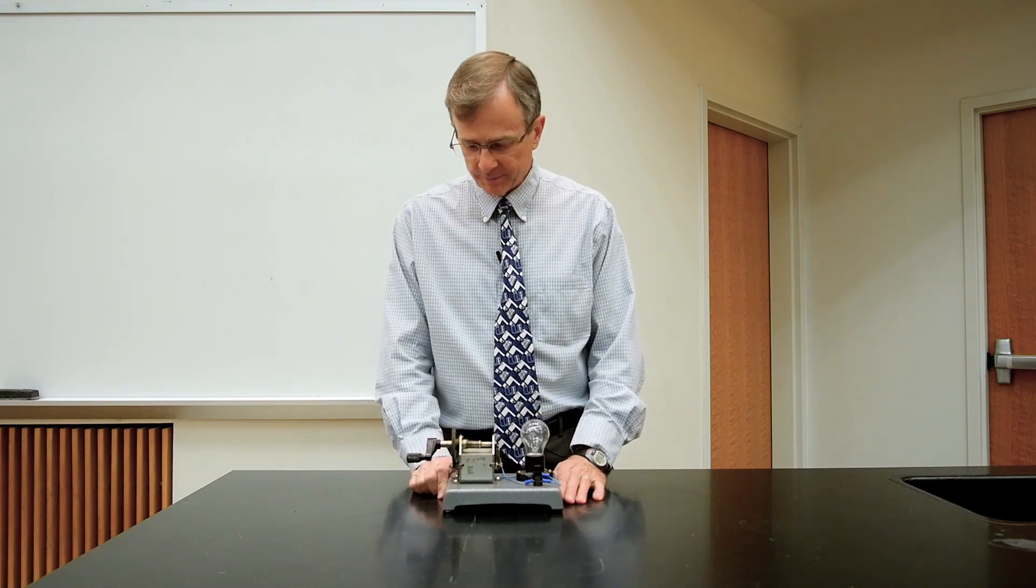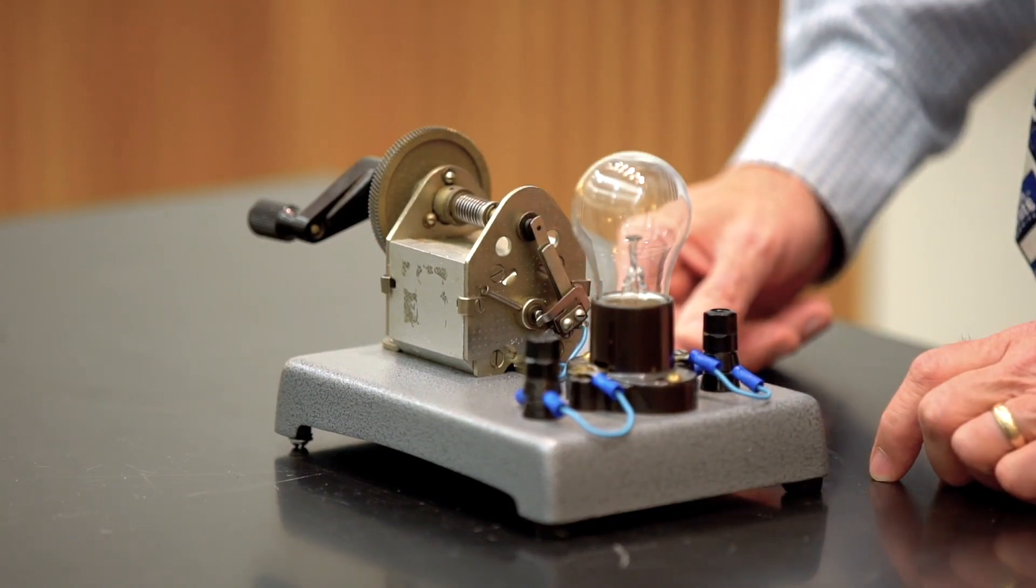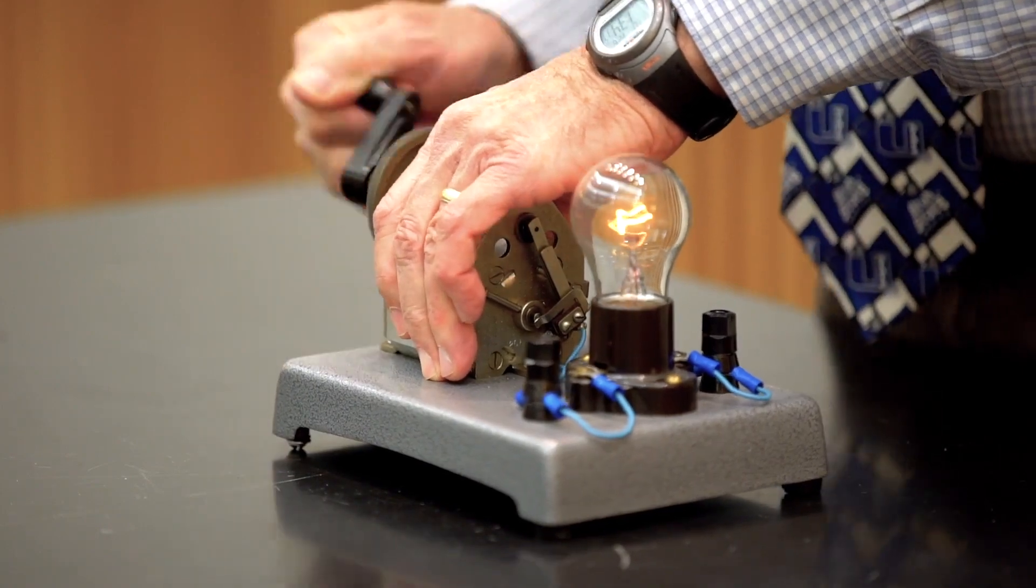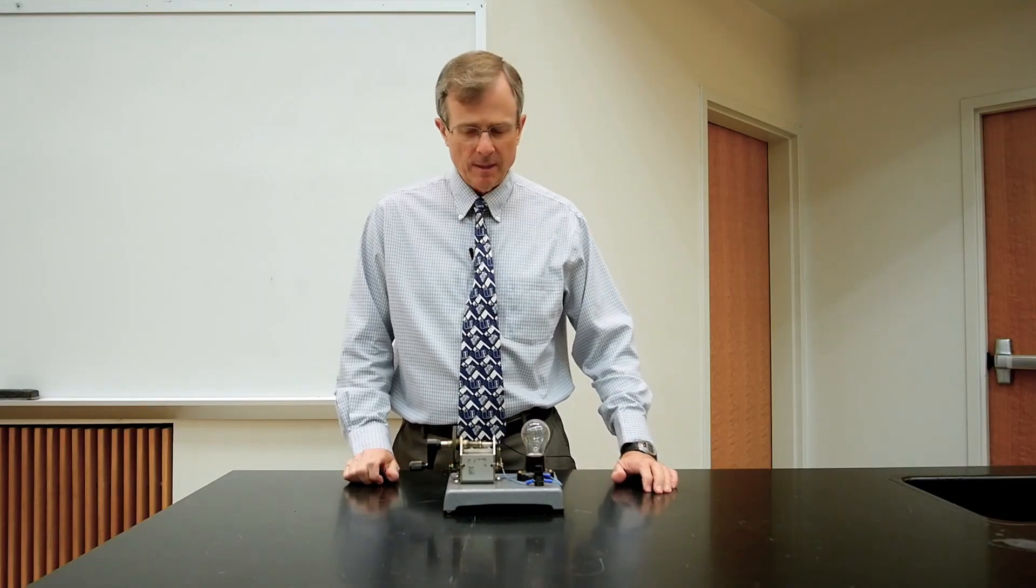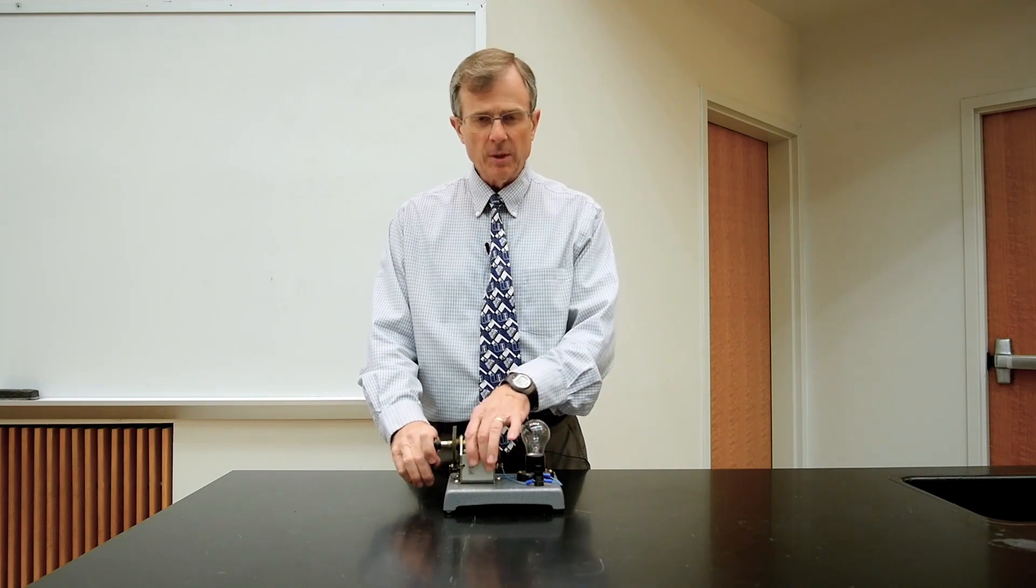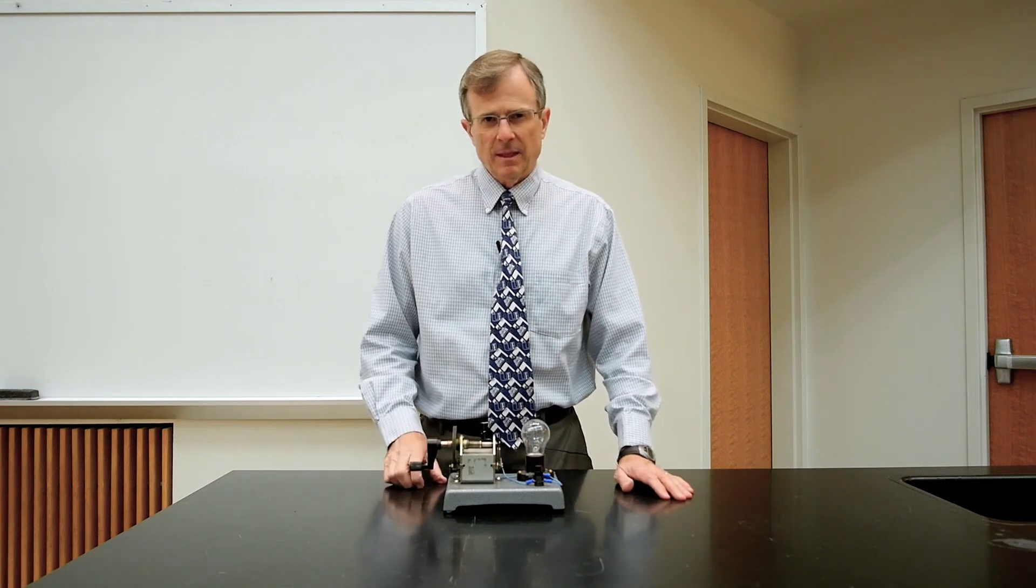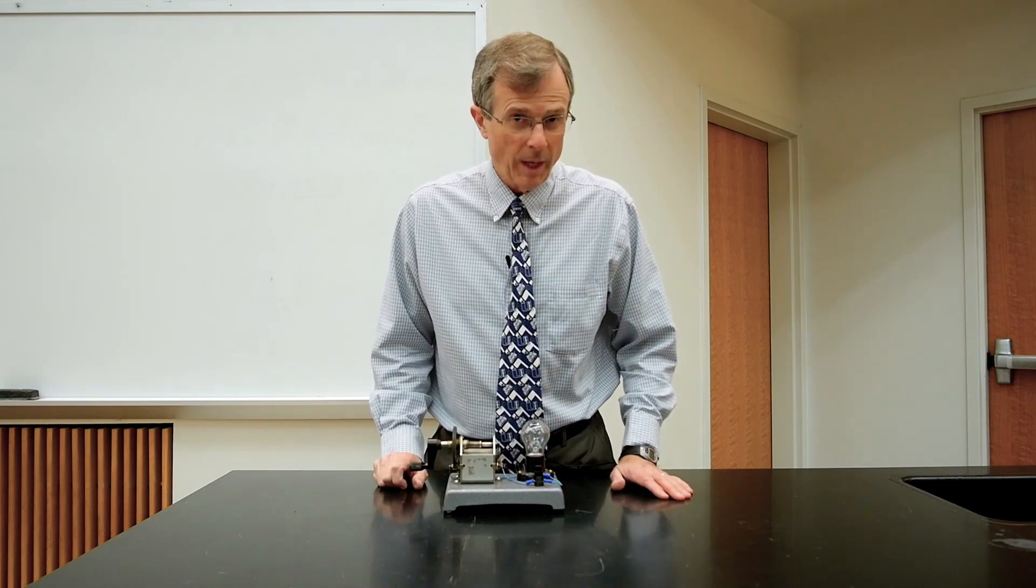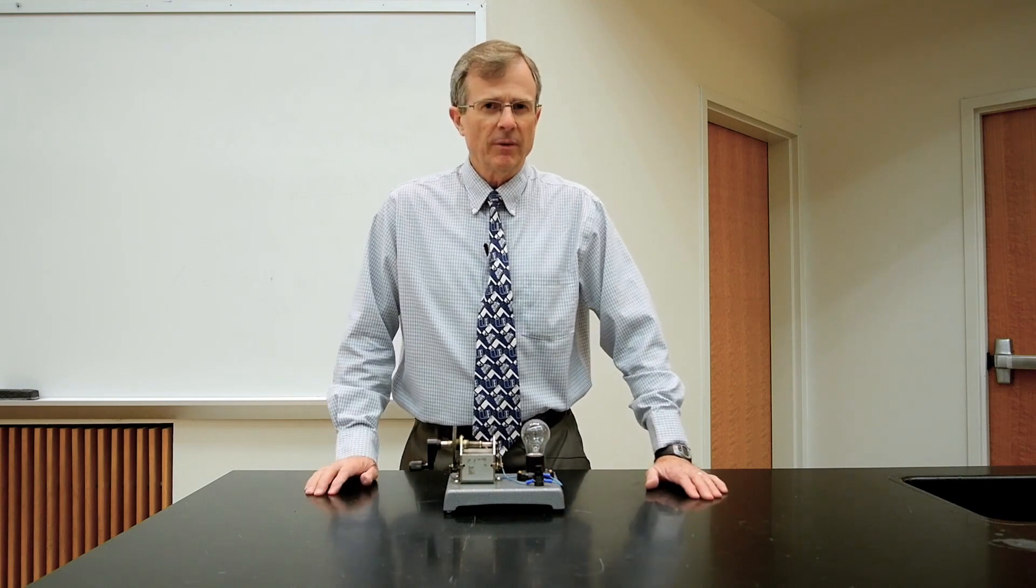This is also a generator. I'm going to turn this crank and generate a current in this bulb. Okay, so what's happening here, this is actually hard to turn, and the reason is that there are coils of wire in here and magnets, and there's a change in flux in the coils of wire that is produced by the turning motion of the coils.